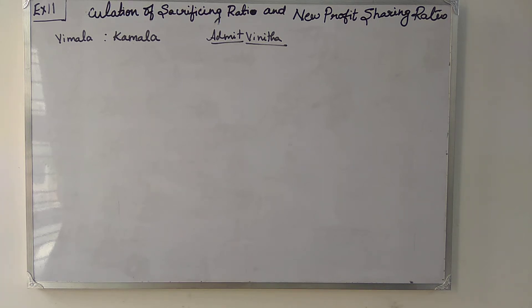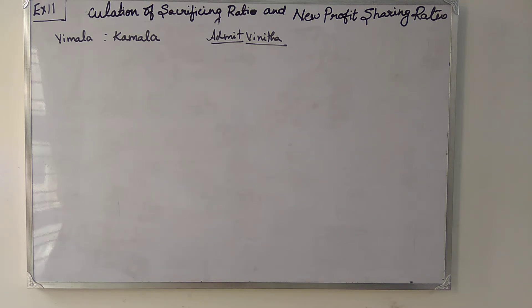Exercise 11 on page 176: we are going to calculate the sacrificing ratio and new profit sharing ratio. Vimala and Kamala are partners sharing profit and loss in the ratio 4:3. Vinita enters into the partnership and she acquires 1/14th from Vimala and 1/14th from Kamala. Find out the new profit sharing ratio and the sacrificing ratio.